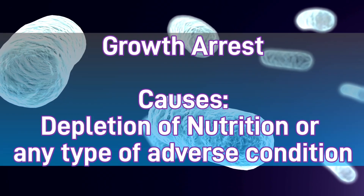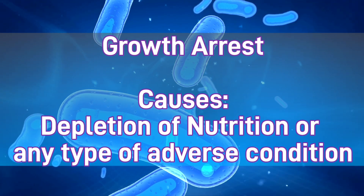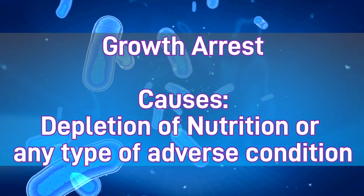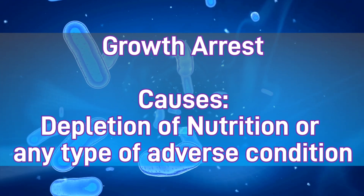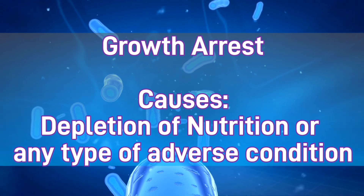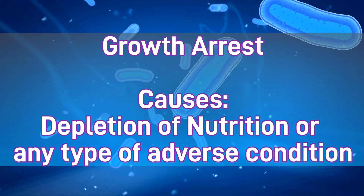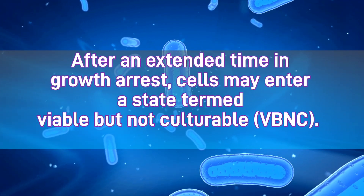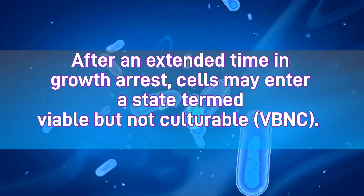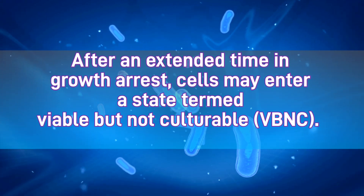Bacteria can grow according to their nutritional requirements in either a natural environment or in a laboratory. In the natural environment, or for some reason if their growth is arrested — which can happen due to several reasons like depletion of nutrients or adverse conditions — you can also implement the VBNC state in a bacterial cell in the laboratory. In both settings, you can find VBNC (viable but non-culturable) bacterial cells.